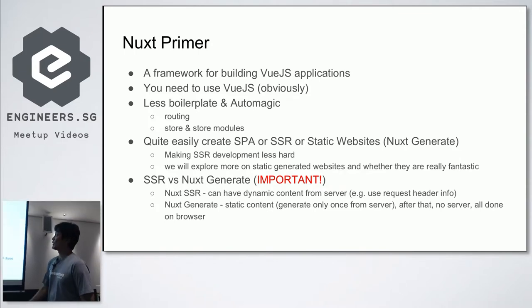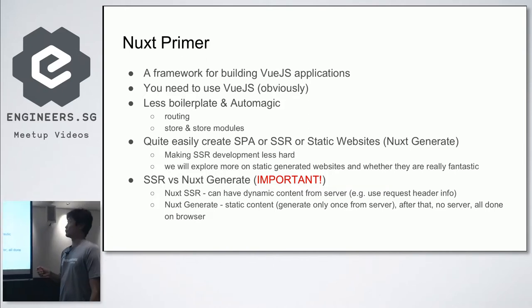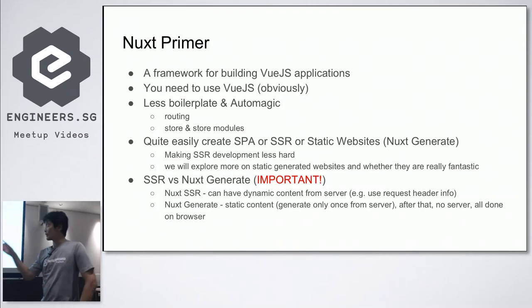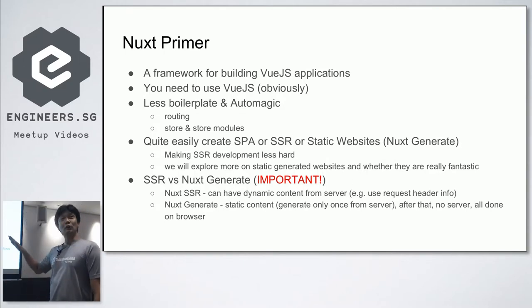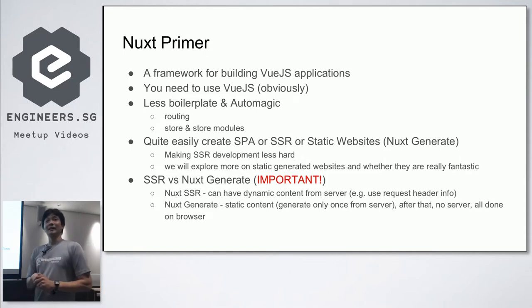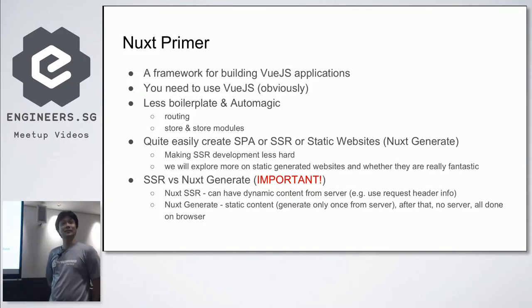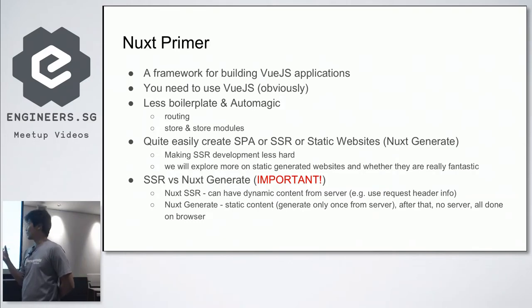Nuxt is a framework for building Vue.js applications, very similar to Next.js. You write less boilerplate and there's a lot of magic behind the scenes — all routing is based on how you name your files and which folder you put them in. Store modules are also magically created when you put something inside the store folder. It's very easy to create a single page application or server-side rendered application by specifying either SPA or universal mode, and you also have generate for static web pages.